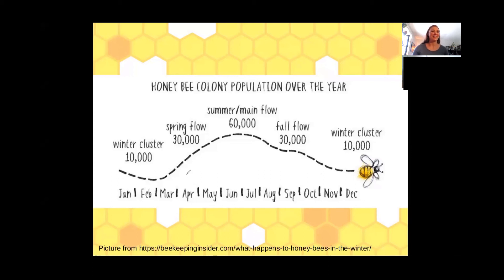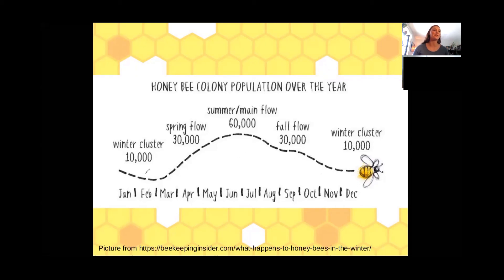This picture I pulled from the internet gives us a good indicator of what happens in a beehive over time. This is going to be slightly different here in Alberta because our climate is a little bit different, but it's a pretty good indicator overall. So in winter, getting into January, February, and into March, it's pretty quiet in a beehive.